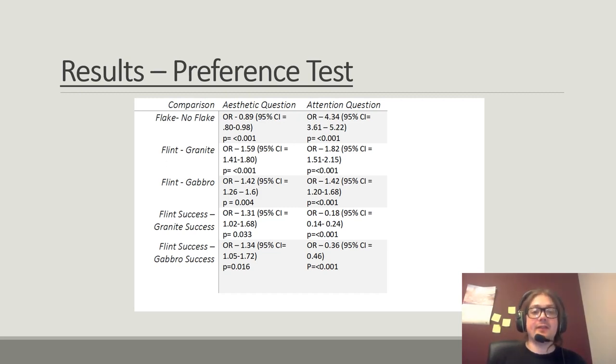Among materials, flint is the reference value, so when compared to flint strikes, listening to strikes on granite or gabbro tended to lead to greater agreement with the statements. This is true for both questions, thus suggesting that together, flake and non-flake producing strikes on flint weren't perceived as particularly aesthetically pleasing or particularly attention-grabbing compared to other materials. Overall, when all strikes were taken together, granite comes out as the most aesthetically pleasing and most attention-grabbing. However, this changes significantly when success status is added as an interaction variable. Successful strikes on flint are much more attention-grabbing than successful strikes on other materials, suggesting that listeners are rating the significantly clearer and higher-pitched sounds of successful flint strikes as most attention-grabbing, but are not enjoying them compared to the lower-pitched sounds and still fairly low-entropy sounds of granite, or the muddier sound of gabbro.